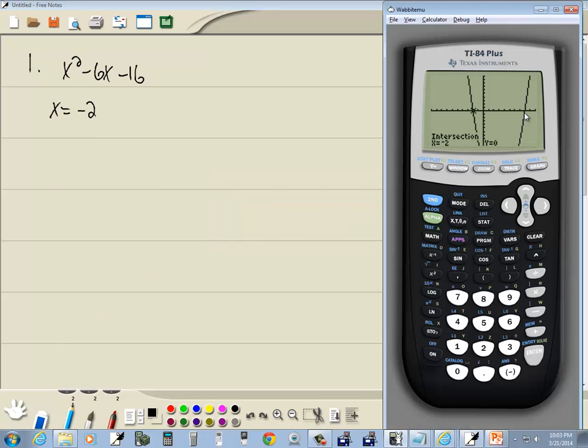Well, we've got another answer over on this side. It looks like 8. So let's do second trace. I'll press 5 for intersect. Enter on our first curve, enter on our second curve. And for the guess, let me actually input what I think the answer is. You don't have to be an x-value close to it. It can be what you think the answer is. So let me put 8 in and press enter. And it comes back and tells us the intersection is x equals 8.